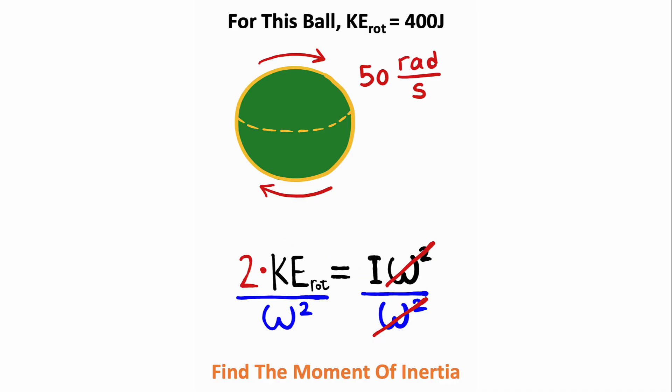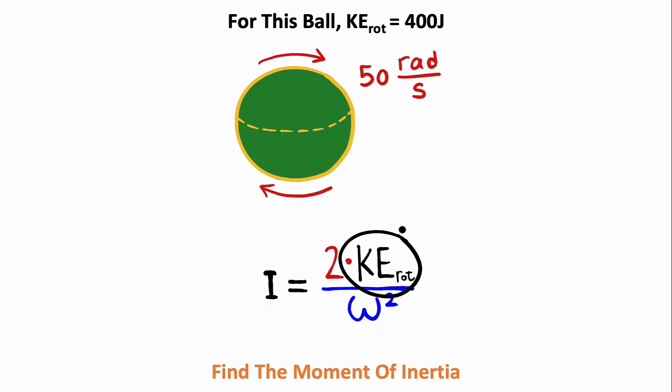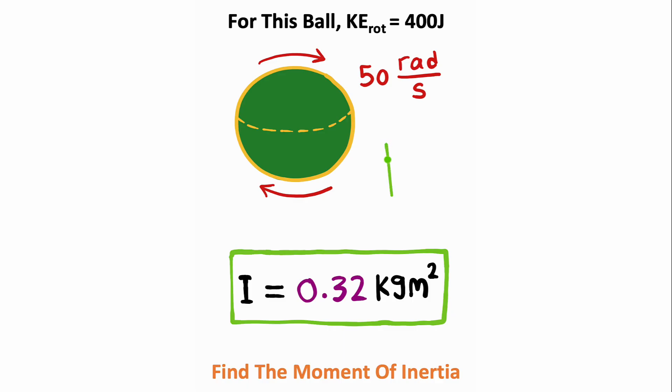The rotational kinetic energy is given to us as 400 joules, and the angular velocity is 50 radians per second. So the inertia is equal to 2 times 400 divided by 50 squared, which on a calculator is equal to 0.32 kilogram meters squared, and that's the answer.